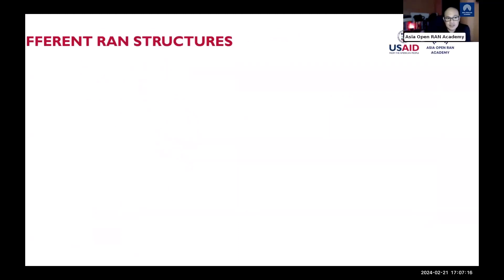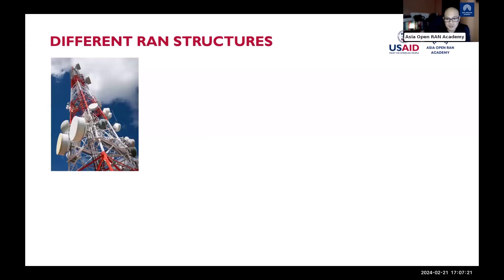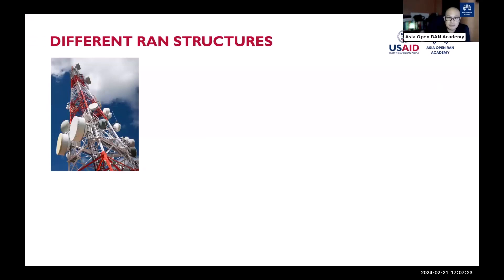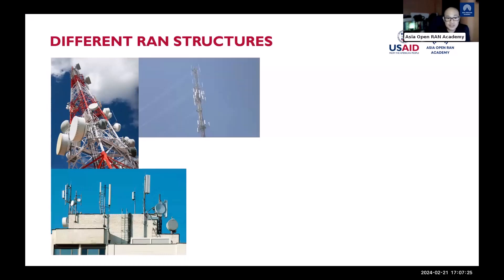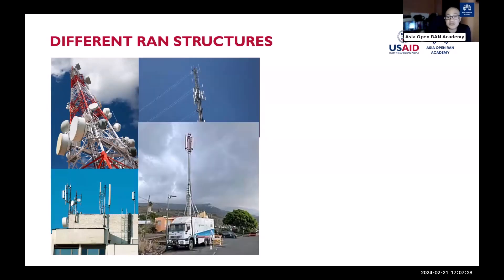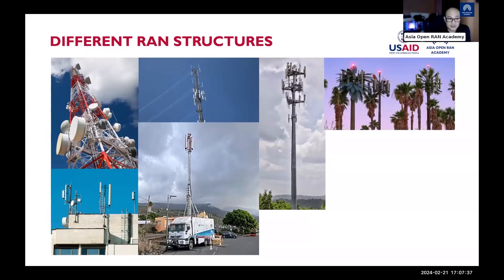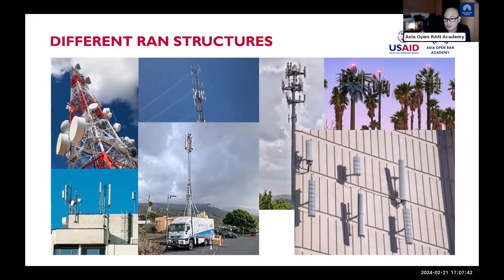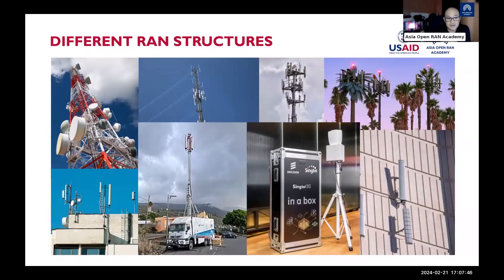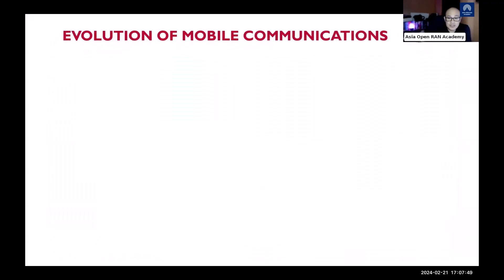There are different RAN structures, each designed to meet specific network requirements, performance goals, and deployment scenarios. These include self-support towers, rooftop sites, guyed towers, monopoles, cell sites on wheels, camouflage sites, wall mounts, and even a network-in-a-box.